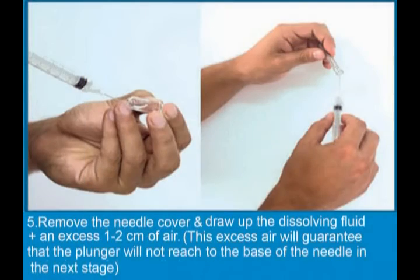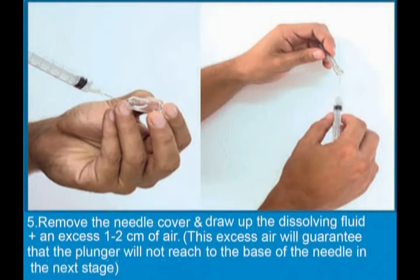Remove the needle cover and draw up the dissolving fluid and excess of 1-2 cm of air. This excess air will guarantee that the plunger will not reach to the base of the needle in the next stage.